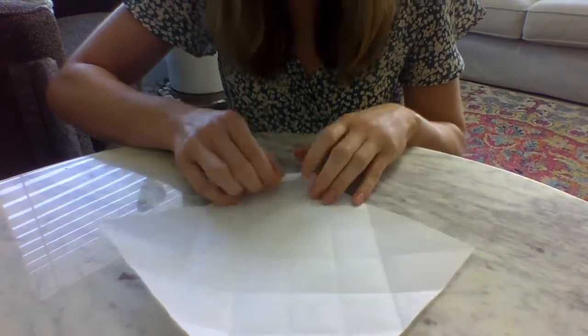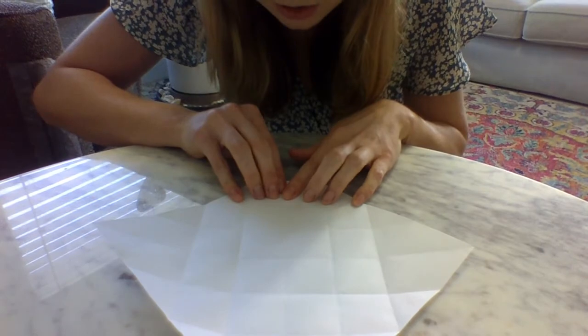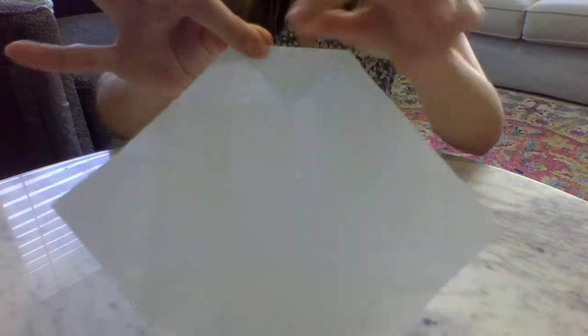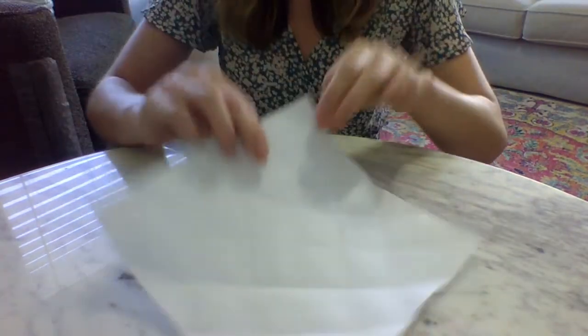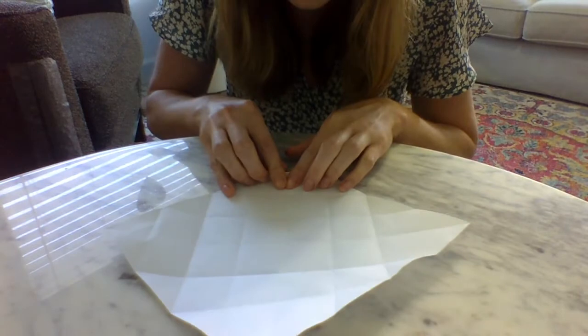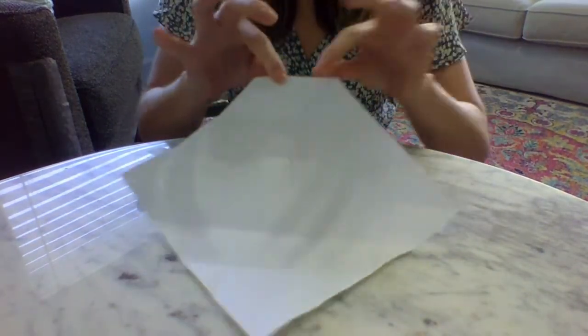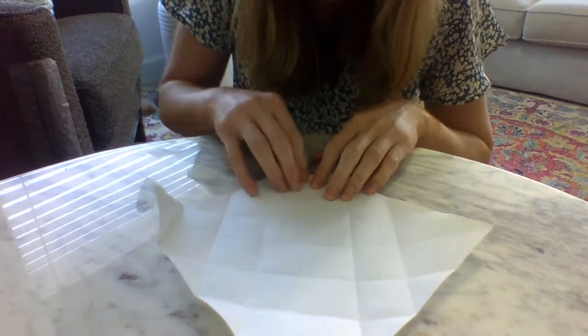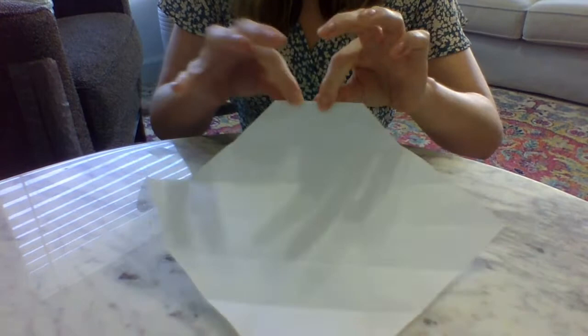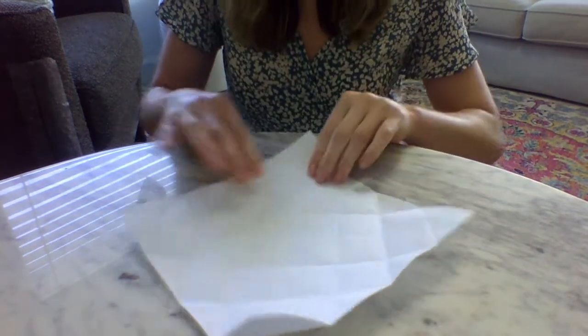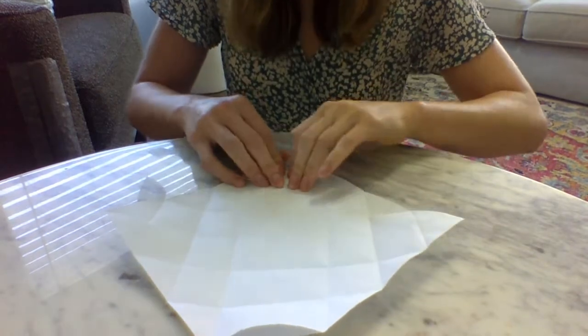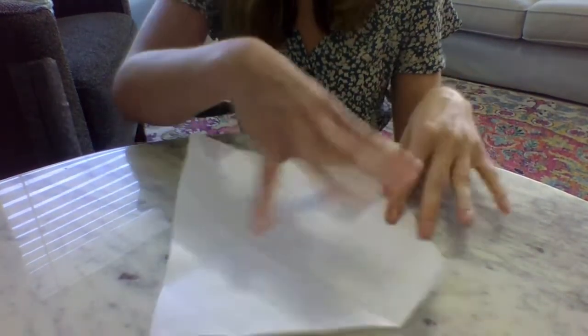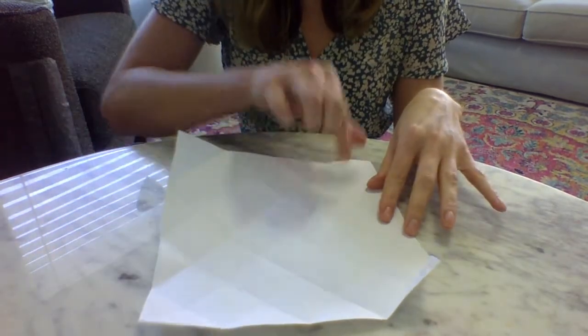Now, take the corner and fold it to the very first horizontal line that you see, like this. And go around and do that for all four corners, making nice, neat creases. So now you have a bunch of little squares and just little tiny triangles on the corners.